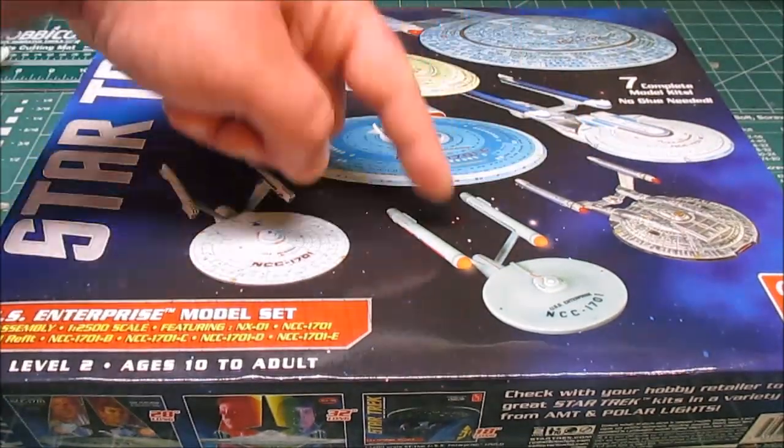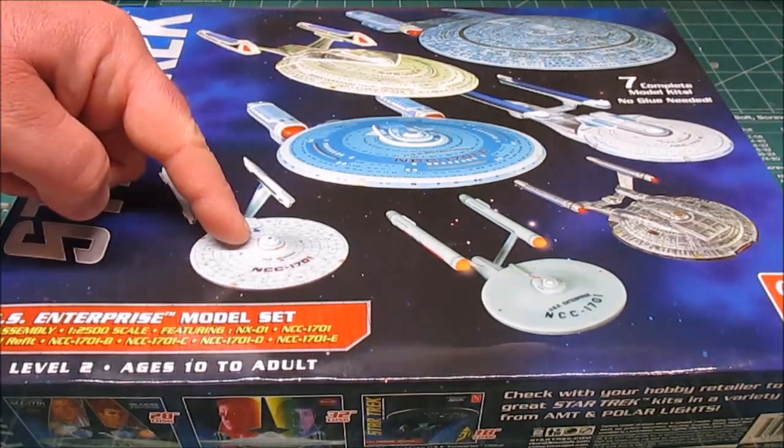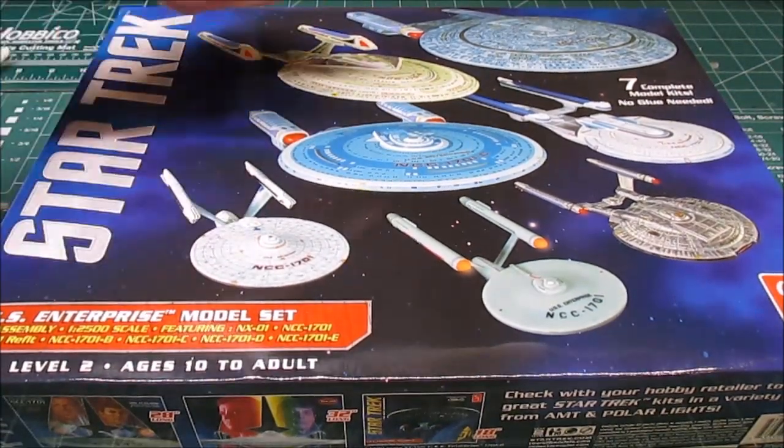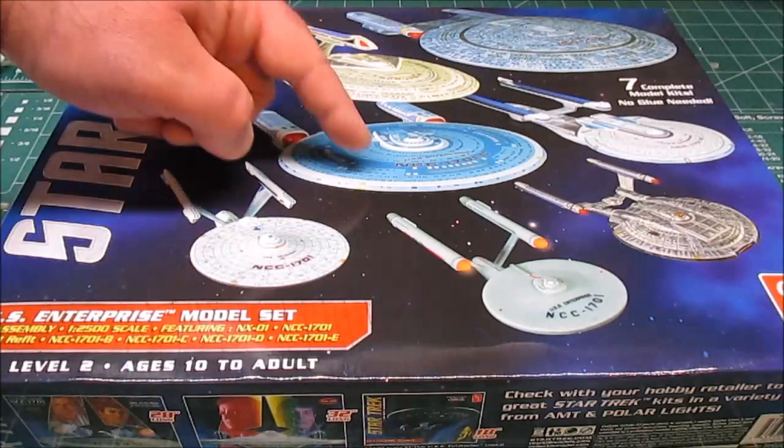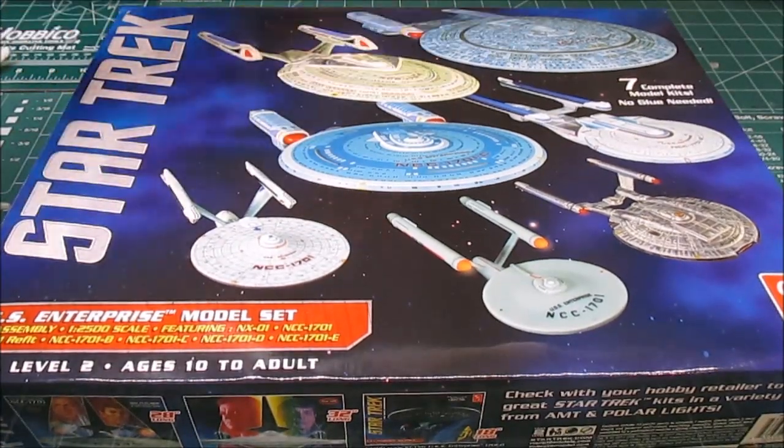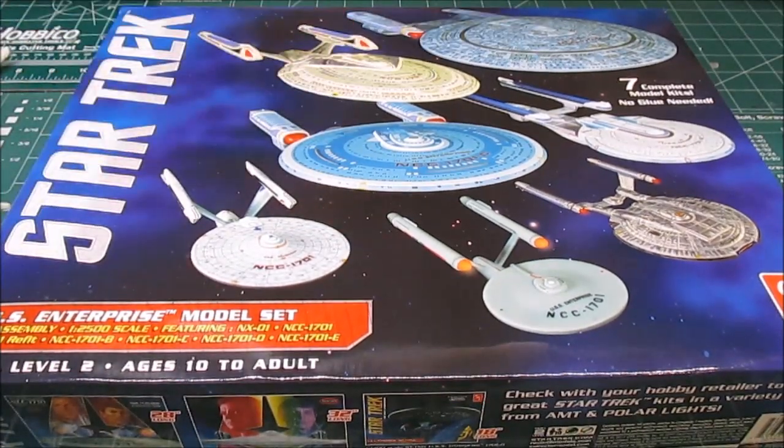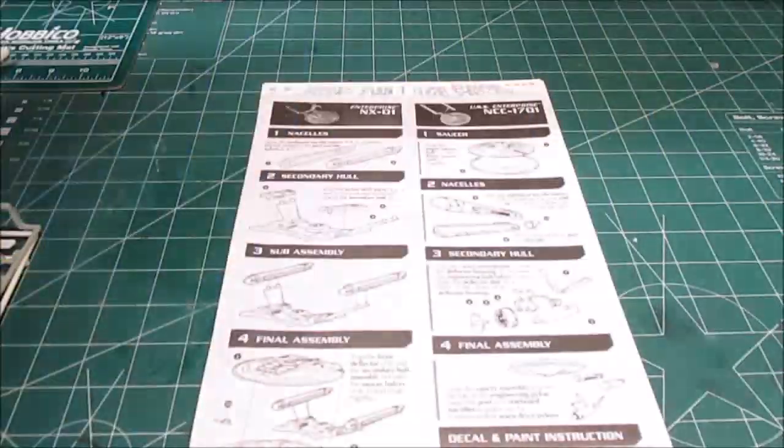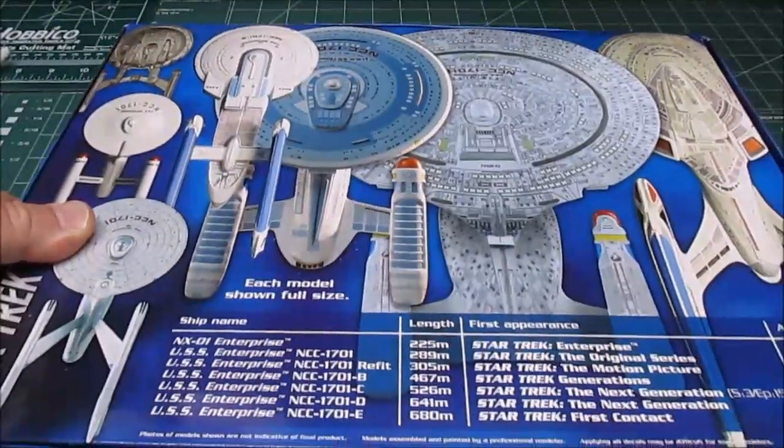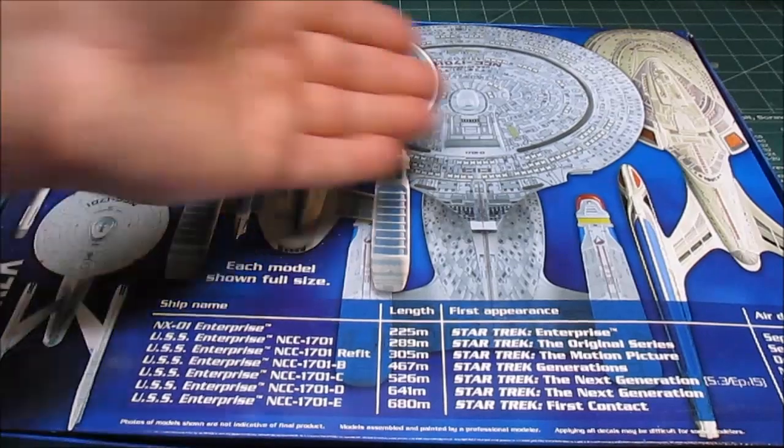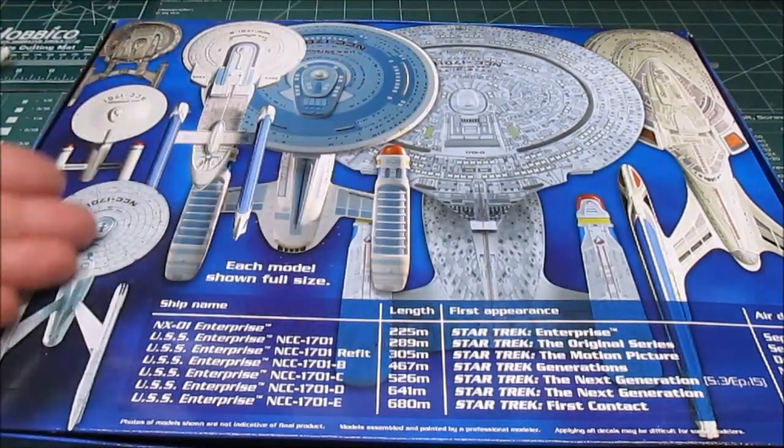You're going to get the NX-01, the 1701, the 1701 refit, the 1701B, the C, the D, and even the E. What's cool about this is on the back of the box, flipping it over for you, is a full-size look at the models so you can use that for your detail guide.